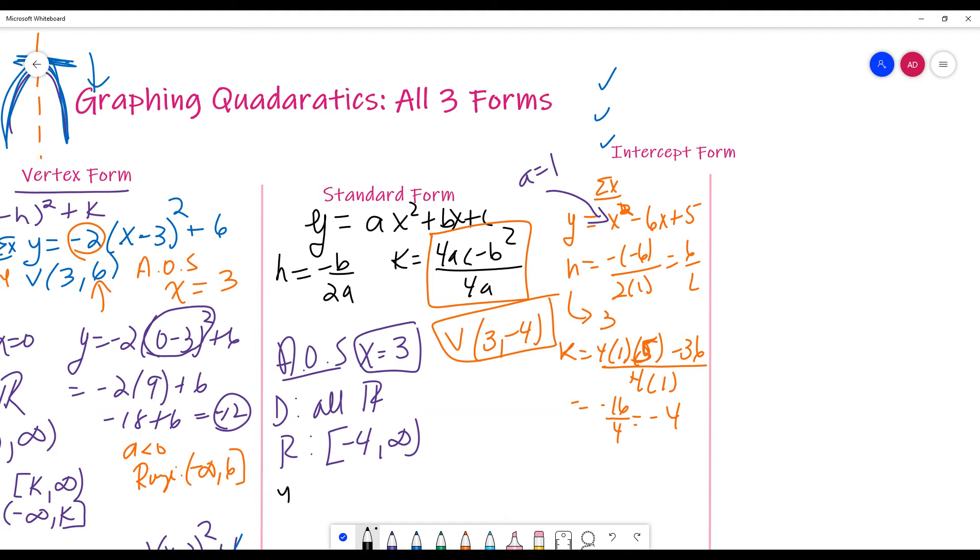Now, to find the Y-intercept, we've always said X equal to 0. Fun fact. When you set X equal to 0 on this guy, you just get the C, right? Because 0 squared, 6 times 0 plus 5. So, you literally are just left with 5. I know, right? Woo! So exciting.